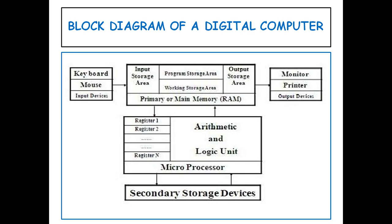The storage unit is another part of a digital computer. Information or a set of instructions are stored in the storage unit of the computer system. The storage unit provides the space to store data or instructions for the processor. Information or data is saved and held in computer memory or a storage device. Data storage is the core function and a fundamental component of the computer.